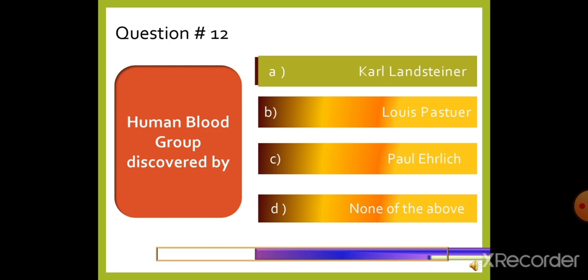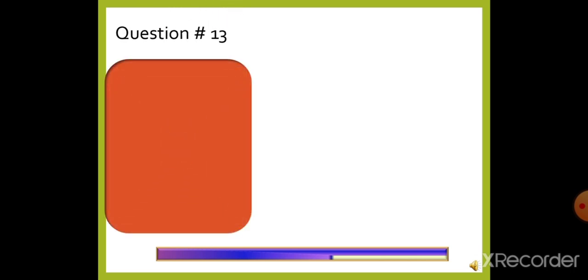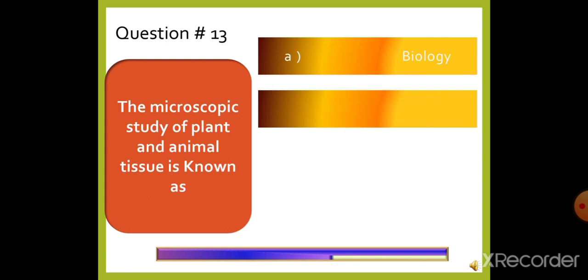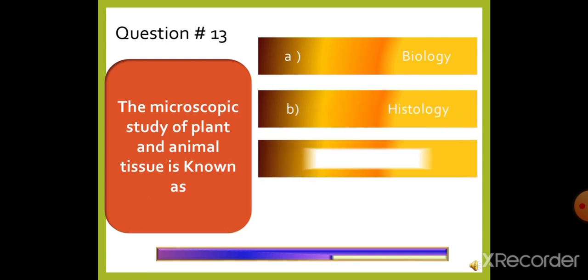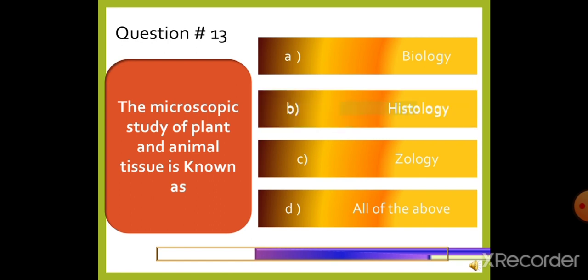Question 13: The microscopic study of plant and animal tissue is known as — option A: Biology, option B: Histology, option C: Geology, or option D: All of the above. The right answer is option B, Histology.